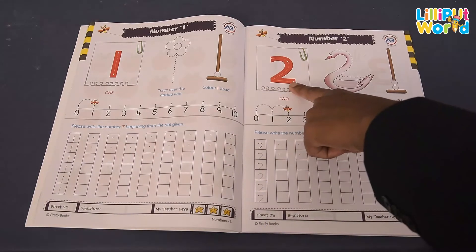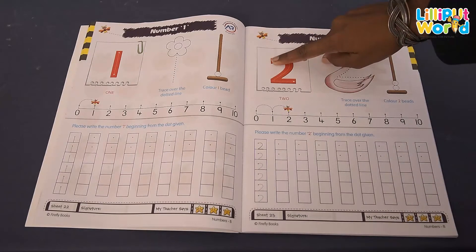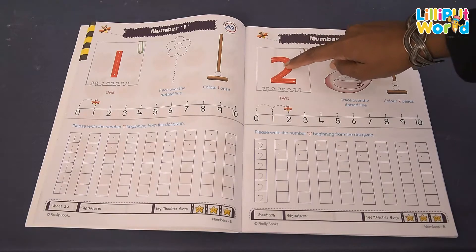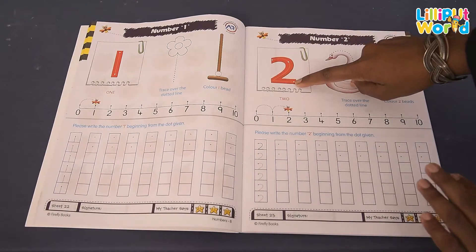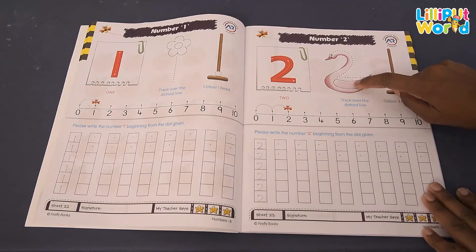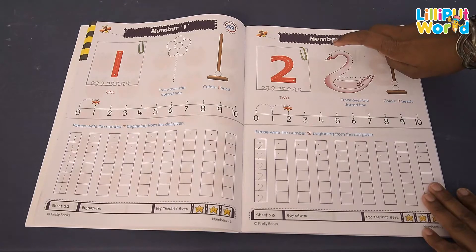Now what can you see here? Number 2. First you have to trace with your finger like this, okay? Curve, slanting and sleeping. Oh, which bird is it? Swan, right? So the number 2 is hidden here. If you are joining the dots, you will get the number 2.